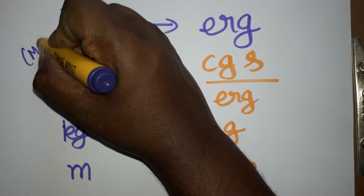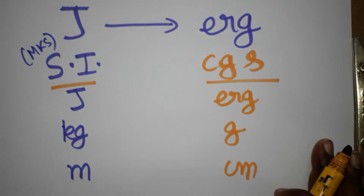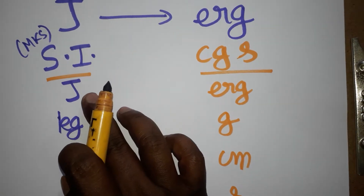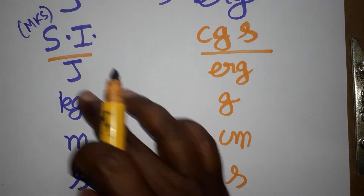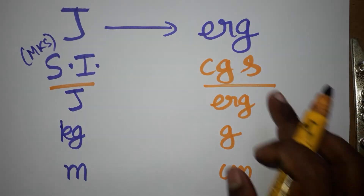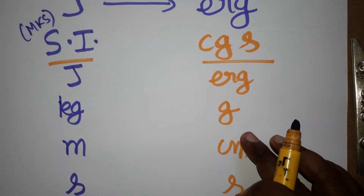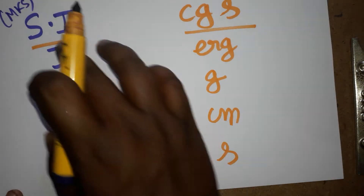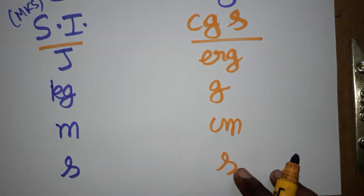The SI unit follows the MKS system: meter, kilogram, second. Joule is an SI unit following the MKS system. ERG follows the CGS system: gram, centimeter, second. So this one follows the MKS system and this one follows the CGS system.